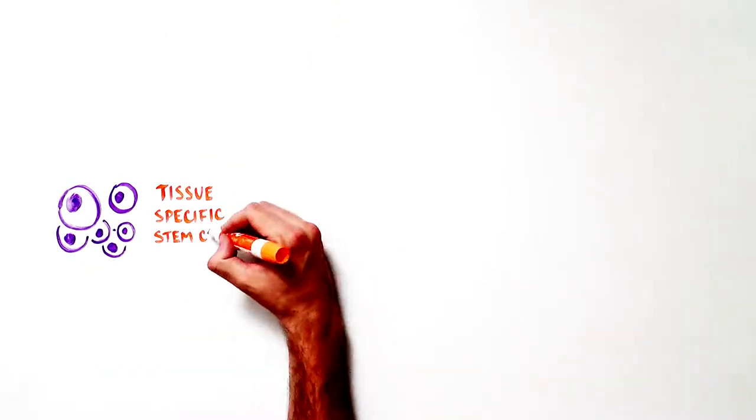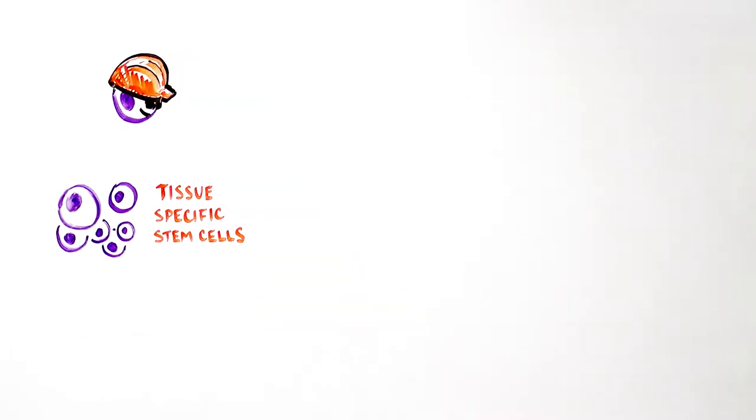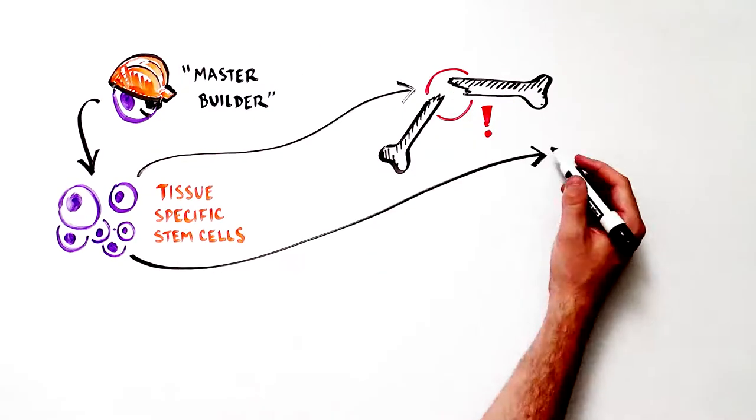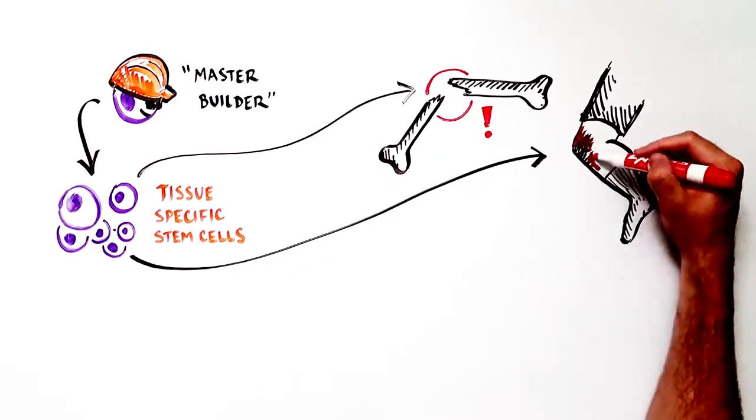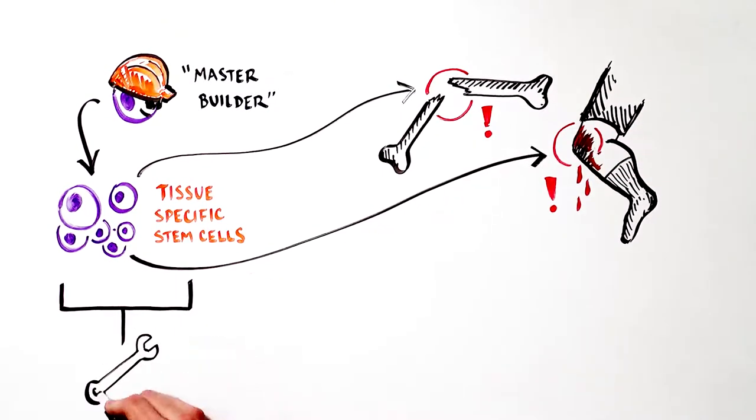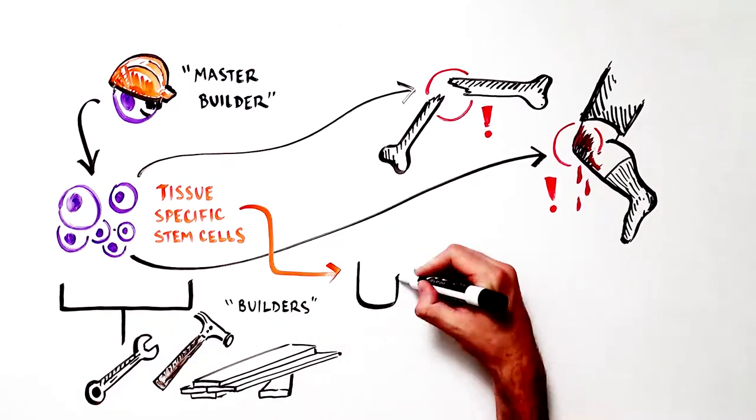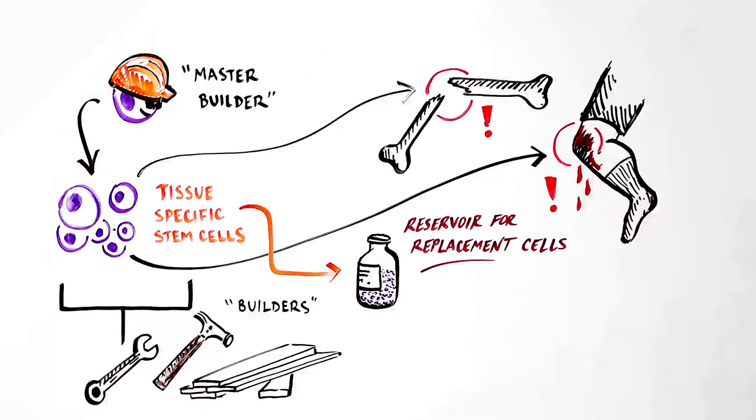Tissue-specific stem cells are derived from the master builder pluripotent cells and are responsible for our body's ability to repair itself after injury, such as a broken bone or a skinned knee, and therefore act as the builders, each of which is responsible for repairing a specific type of tissue.